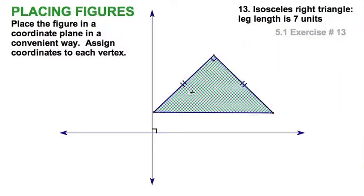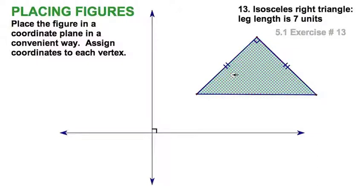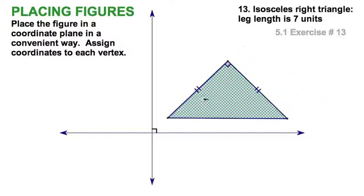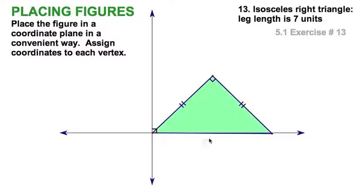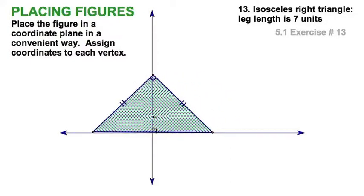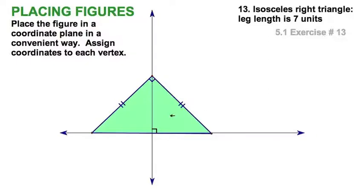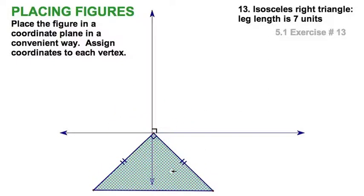Well, let's take this isosceles triangle and place it on the coordinate plane. Now, there's a lot of ways I could do it. I could put a vertex at the origin there. I could place it like this. I could place it like this.